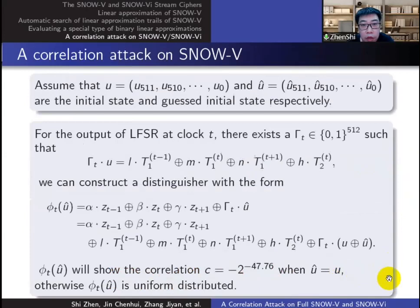The last part is to launch a correlation attack on SNOW-V using the distinguisher. If u and u-hat are the initial state and guessed initial state respectively, the distinguisher will show the correlation if u-hat equals u. Otherwise, the distinguisher φ_t shall be uniformly distributed.